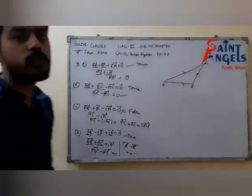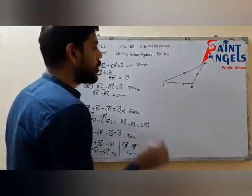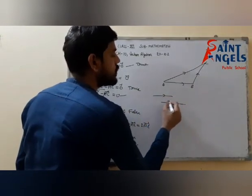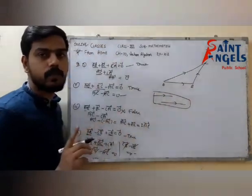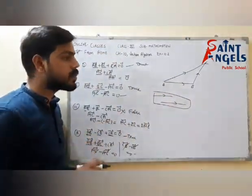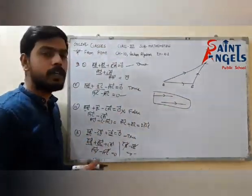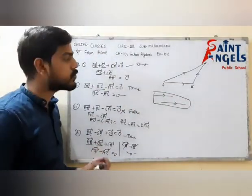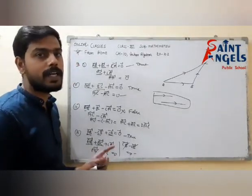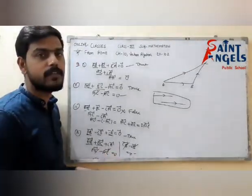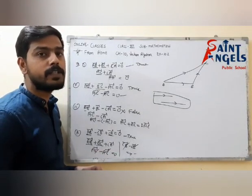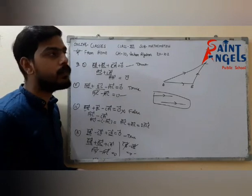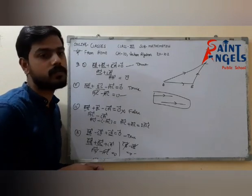Question number 19 is also true/false type. For collinearity, it is not necessary that vectors have the same direction or the same magnitude. The vector only needs to be parallel. So the option that says vectors should have different magnitude and same direction is incorrect. In question 19, that option is false. Tomorrow in the next video we will learn about the product of two vectors. See you in the next video.